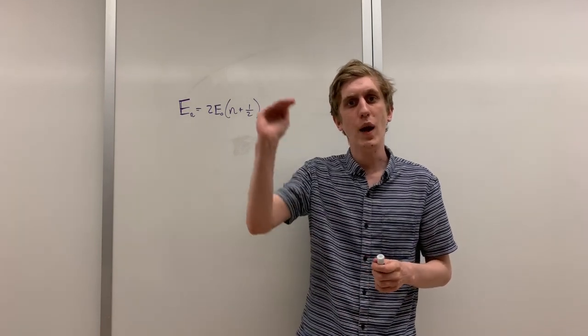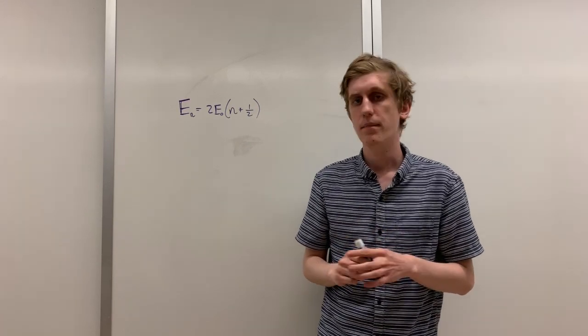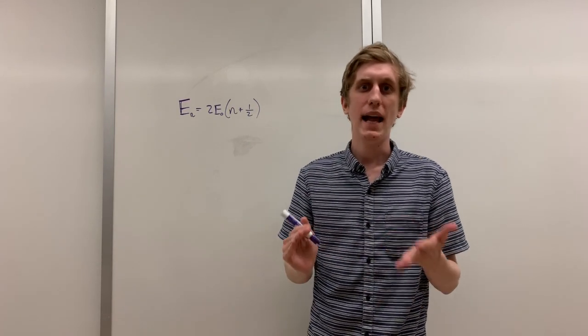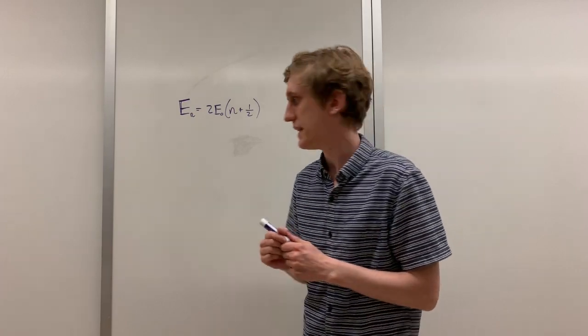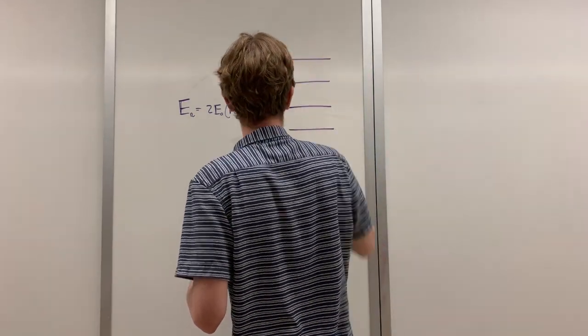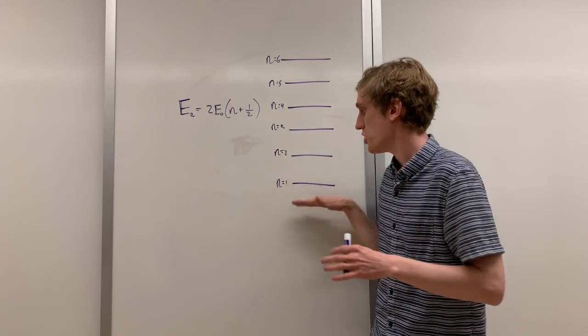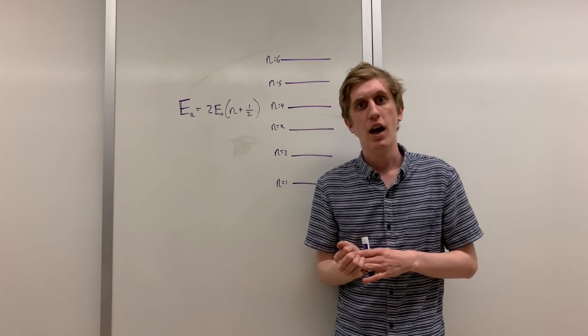If we were to draw it out as we did with the hydrogen atom, it would look like this. E-knot just represents the lowest possible energy of the system.